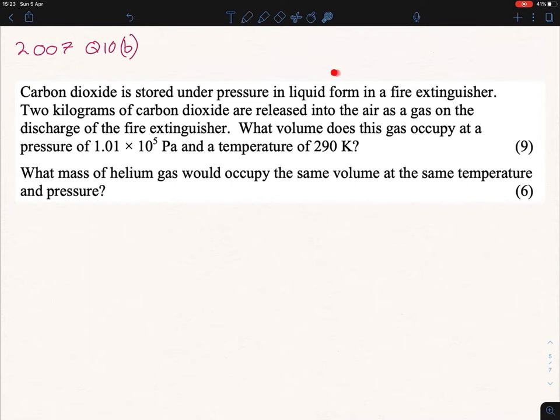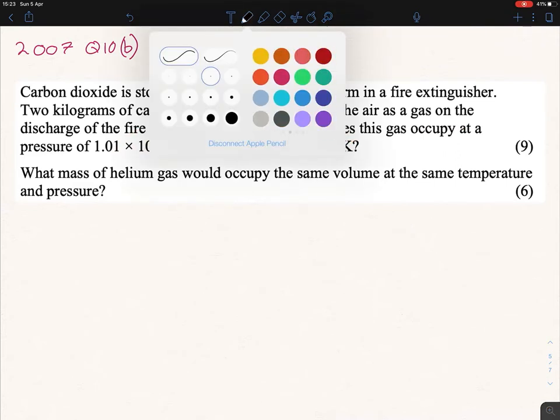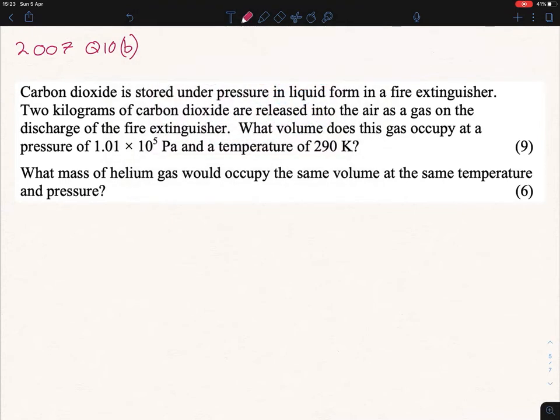You're told that carbon dioxide is stored under pressure in liquid form in a fire extinguisher. Two kilograms of carbon dioxide are released into the air as it's discharged from the fire extinguisher. You're asked for the volume at a given pressure and temperature.